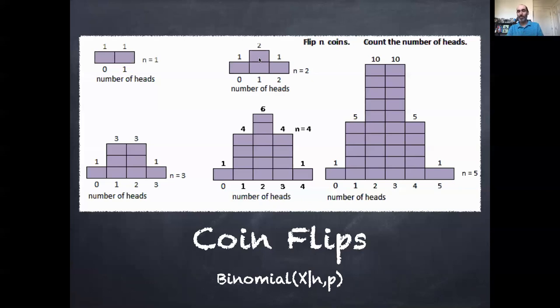So 90% chance times 10% chance, giving a 0.9% chance, two ways, 18% chance, and all those probabilities add up to one.